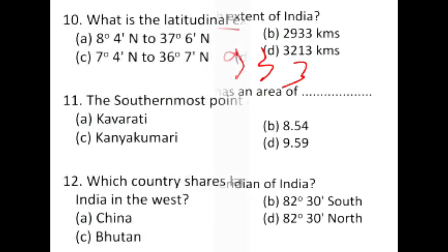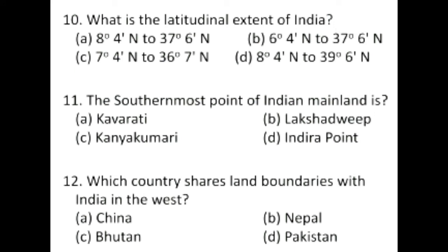Question number 10: What is the latitudinal extent of India? The answer is from 8 degrees 4 minutes north to 37 degrees 6 minutes north — these are the southernmost and northernmost extents. The southernmost point of the Indian mainland is Kanyakumari or Cape Comorin. If we include islands, the southernmost point of India would be Indra Point.